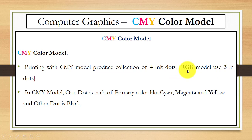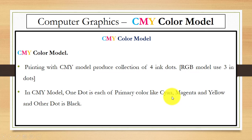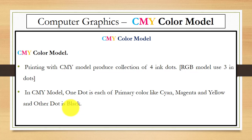In the RGB model you have three primary colors — red, green, and blue — with which you can print output on paper. But in the CMY color model, we use four ink dots: one for each primary color in this model — cyan, magenta, and yellow — plus we add an extra ink dot that is black.